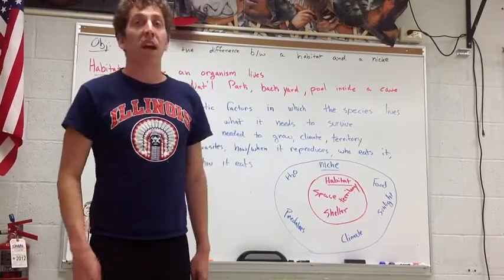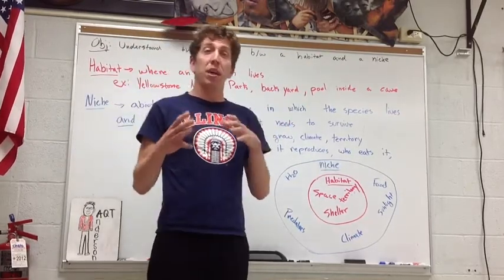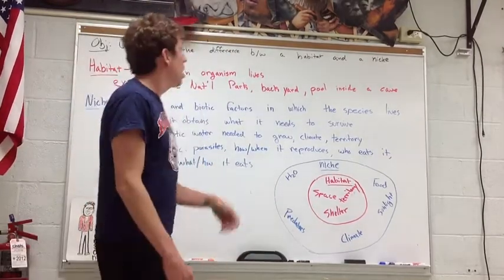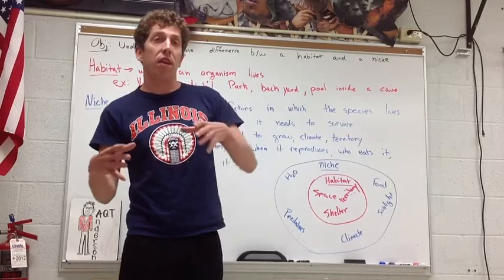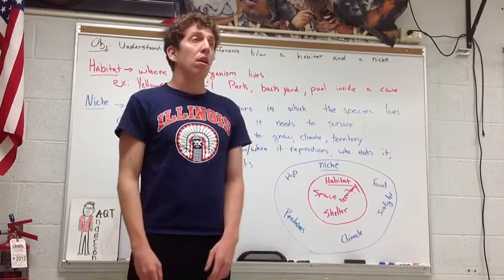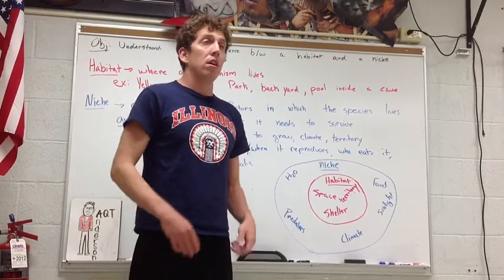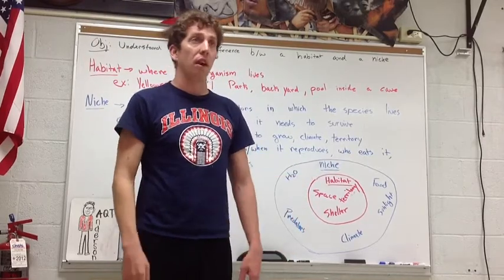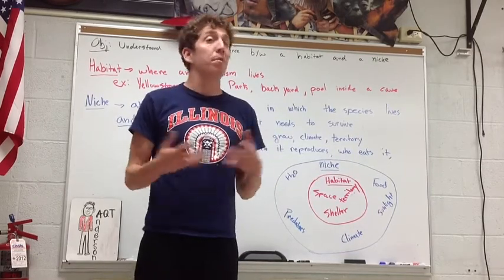So at the beginning of the video, I said we were going to talk about the difference between a habitat and a niche. A habitat would be the place where an organism lives — Yellowstone National Park, your backyard, the pool inside of a cave. It depends on the species and size. For example, a blue whale can live in huge expanses of the ocean — blue whales migrate from the Arctic all the way to the Bahamas in a single year, so their habitat is very big. But if you're talking about an insect, it could be something a lot smaller.